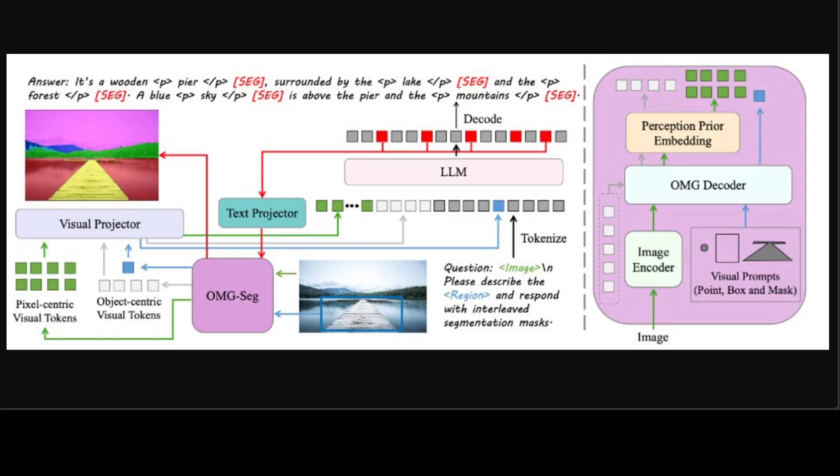This overview shows how OMG-LLaVA works. OMG-LLaVA consists of OMG-Seg and an LLM. OMG-Seg tokenizes the image into pixel-centric visual tokens, detects objects, and inputs visual prompts into object-centric visual tokens. The seg token output by the LLM is decoded by OMG-Seg into segmentation masks. Notably, OMG-Seg remains frozen at all stages, and that is the beauty of this design.